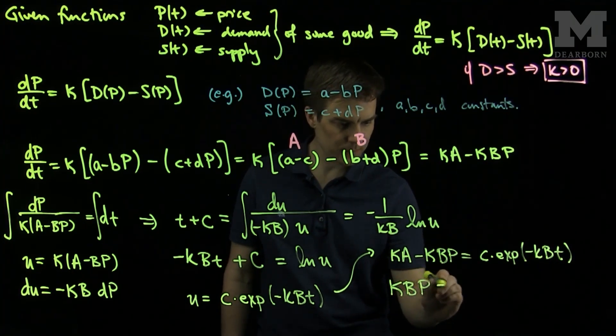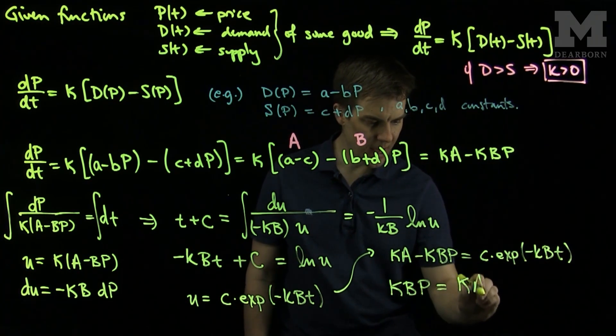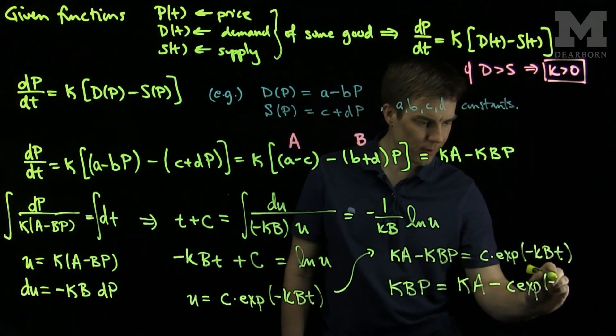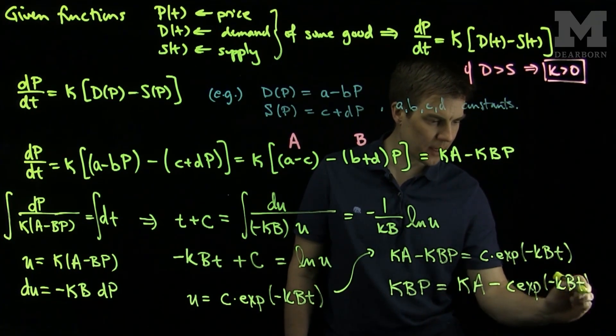And I can now write this as KBp is equal to KA minus c times the exponential of negative KBt.